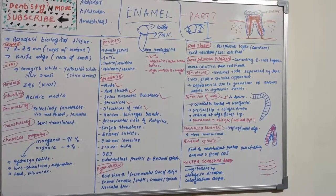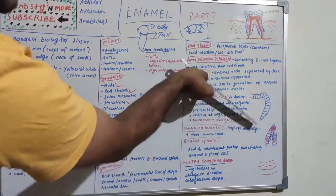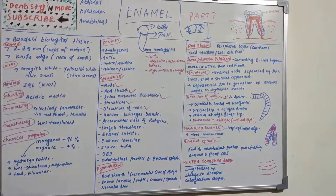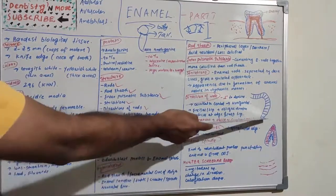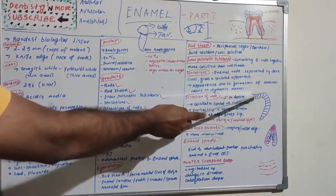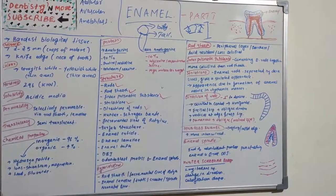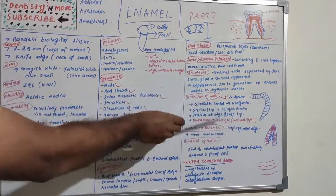In permanent teeth, the arrangement of rods is similar to deciduous teeth in the occlusal two-thirds. However, in the cervical region of permanent teeth, the rods deviate from horizontal to a more apical direction. There are also alternative clockwise and counterclockwise deviations of rods from the radial direction, which can be observed at all levels.